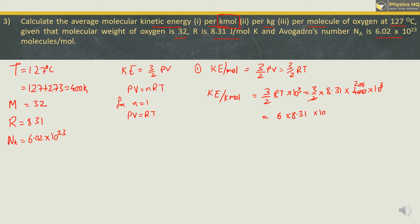Calculating: 6 × 8.31 = 49.86, so E per kilomole = 4986 × 10⁵ = 4.986 × 10⁶ joules per kilomole.